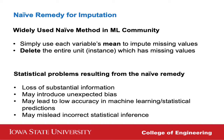These naive methods can cause statistical problems. If we delete rows, we lose substantial information. Also, naive methods may introduce unexpected bias because we simply use the mean of observed values only. As a result, they may lead to low accuracy in machine learning and statistical prediction, and may mislead incorrect statistical inference or critical decision-making.